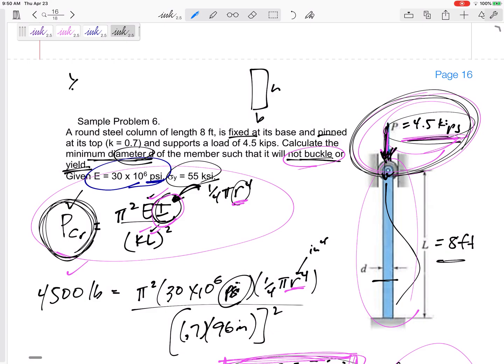Then 1/12 BH³ is one and 1/12 HB³ is the other. So Ix would be this, Iy would be this, and one might be larger than the other.